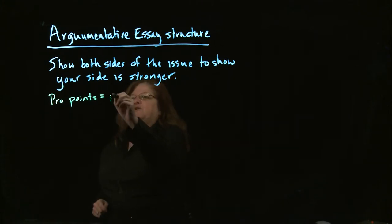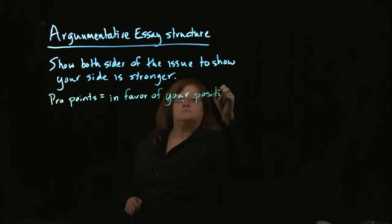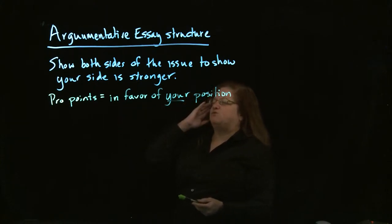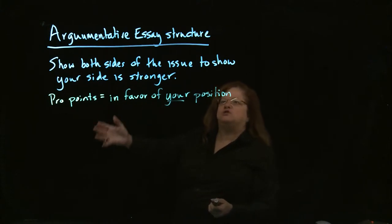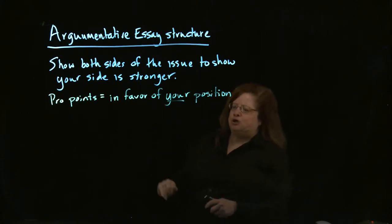Those are the points in favor of your position. This can get a little bit confusing because when we think of the word pro, it means for. But you have to remember the pro points are going to be the ones for your position, which means in a little bit of a confusing way, if your position is against something, for example if you're against the death penalty, then your pro points are actually going to be the points against the death penalty. So pro points in your argumentative essay are going to be the points that you agree with.